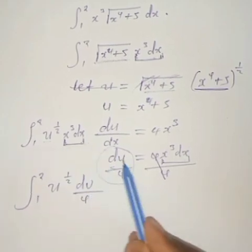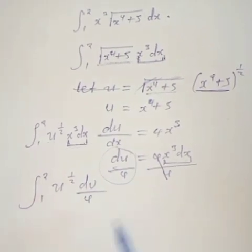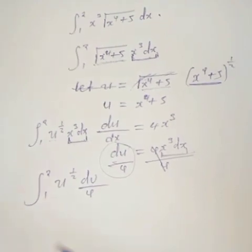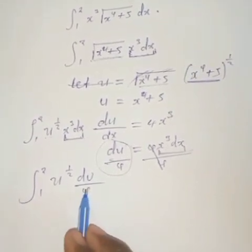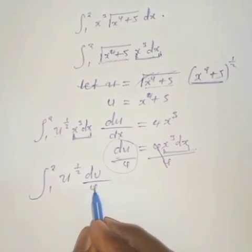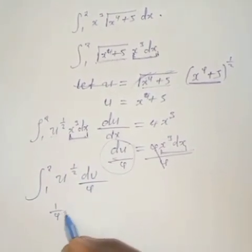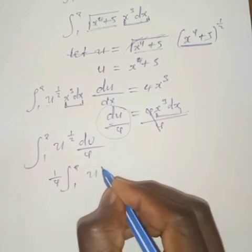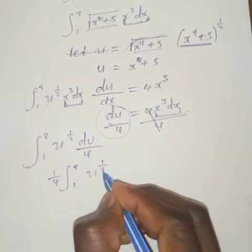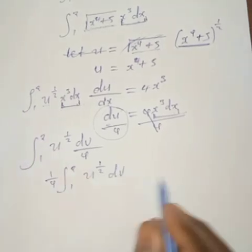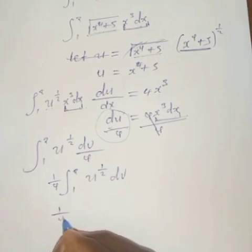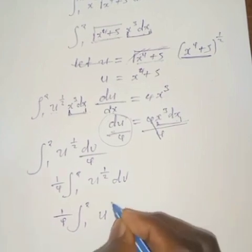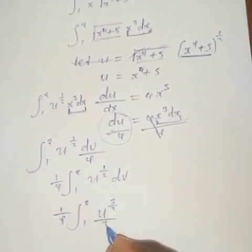We do not integrate things with a denominator, so the 4 must move to the other side. This gives us 1 over 4 times the integral from 1 to 2 of u to the power 1 over 2, du. Integrating this, we get 1 over 4 times u to the power 3 over 2, divided by 3 over 2, evaluated from 1 to 2.